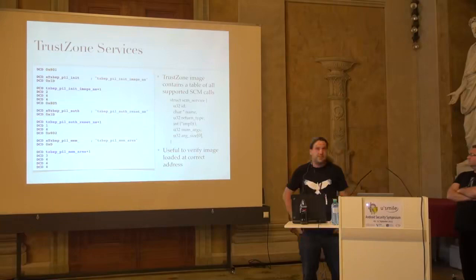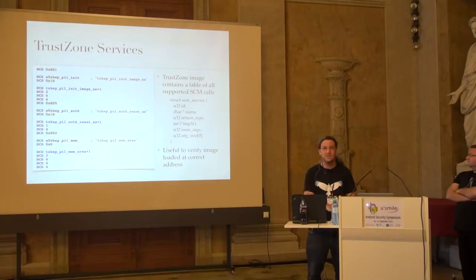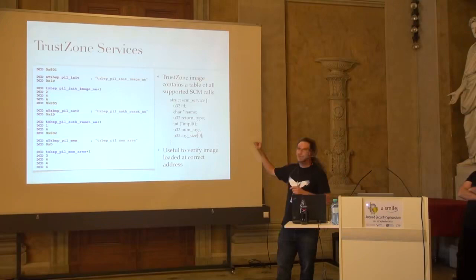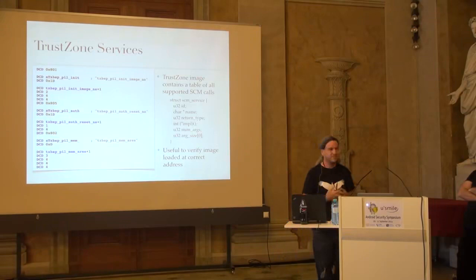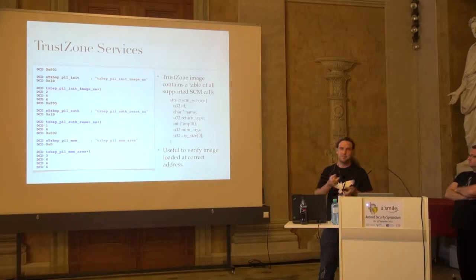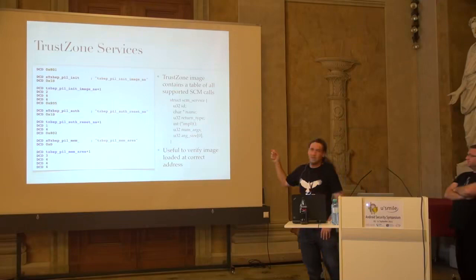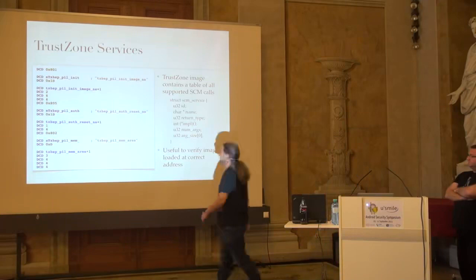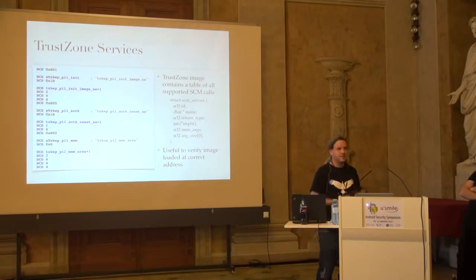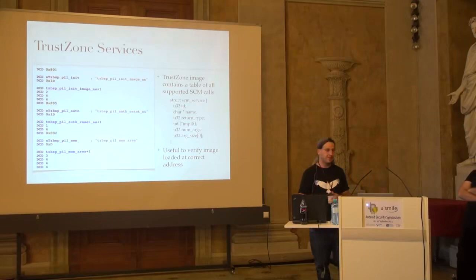That big table we had before - we generated that because very conveniently within TrustZone is a service table. What it contains is an ID for each function, the name of what that function is - so we know what it does, which is very convenient for reverse engineering. It has what values it returns - a buffer, a shared buffer, or just a return code. It has a function pointer to what handles that on the TrustZone side. And it encodes parameter information - for example, '244' means it takes in two parameters: the first four bytes long, the second four bytes long. Using this, you can get a very good understanding of what they take as arguments and how they're processed.